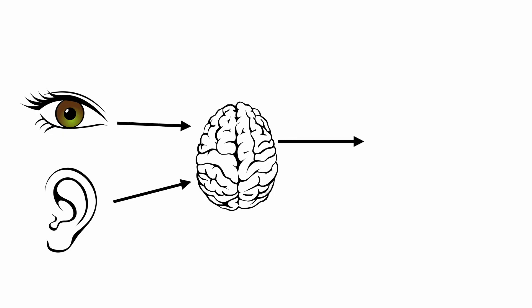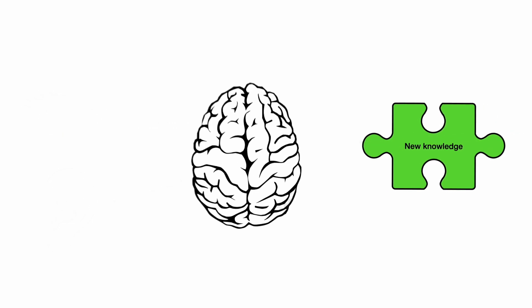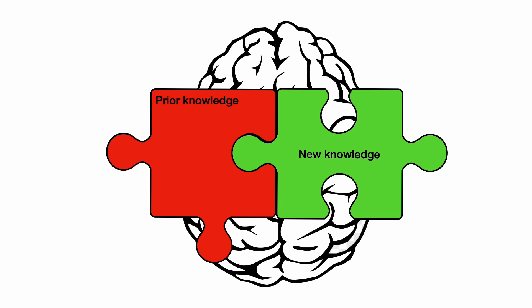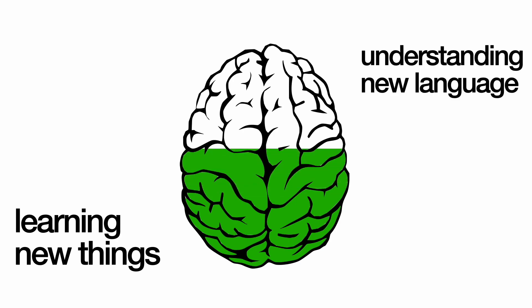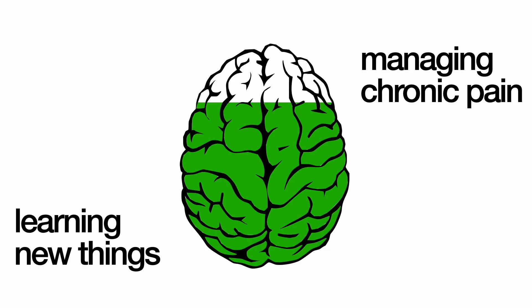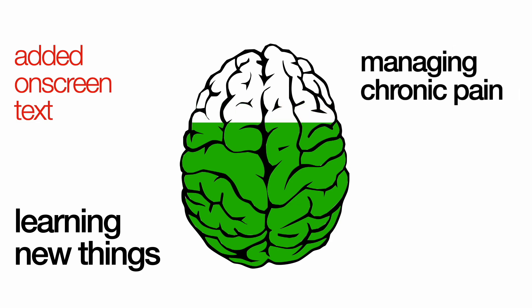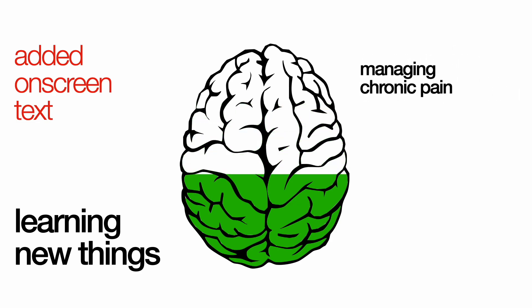It helps to remember that cognitive processing can come in many forms. The effort to make sense of new material and fit it into your prior knowledge takes up cognitive processing. However, other things can also use up cognitive processing capacity, such as understanding material in another language. Another study involving adults in chronic pain also showed a benefit to having on-screen text, because the text helped offset the cognitive drain they experienced from their chronic pain.